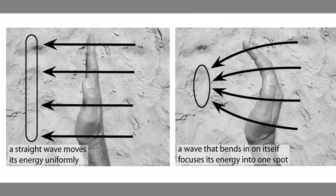If a wave approaches the land straight, like the hand here, its energy is going to be spread out evenly across the coast. But if refraction causes the wave to bend concave in the direction that it's traveling, like the curved hand here, it's going to cause it to focus its energy into one spot. And that's going to tend to make a really big wave in just one spot.